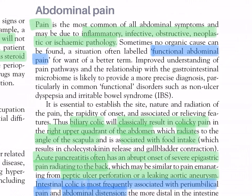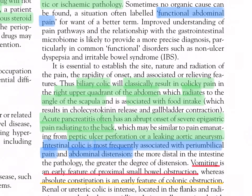It is essential to establish the site, nature, and radiation of the pain, the rapidity of onset, and associated or relieving features. Thus, biliary colic will classically result in colicky pain in the right upper quadrant of the abdomen which radiates to the angle of the scapula and is associated with food intake, which results in cholecystokinin release and gallbladder contraction.